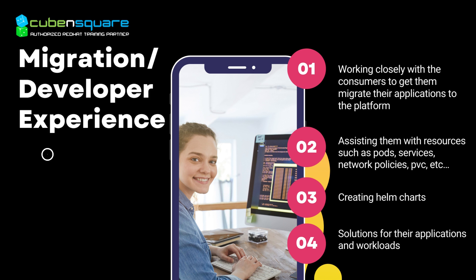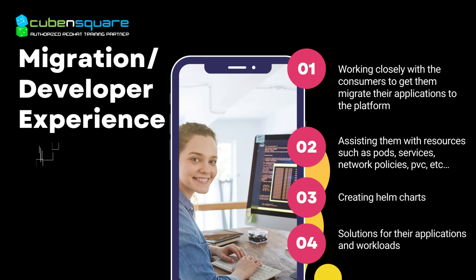For application migration, he works closely with all consumers and application teams, explaining the platform and its benefits, then migrating applications to the OpenShift Container Platform. He assists teams with resources like pods, services, network policies, and persistent volume claims. He is also responsible for creating Helm charts — either obtaining them from OperatorHub or the Red Hat Marketplace, or creating custom CRDs with his own Helm charts.